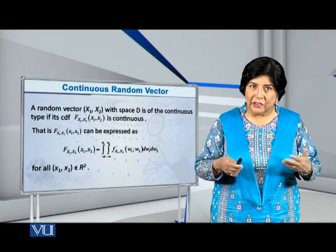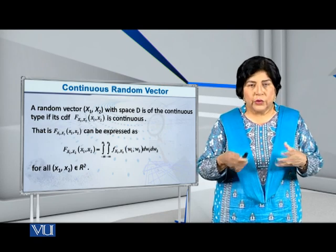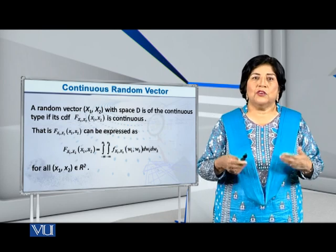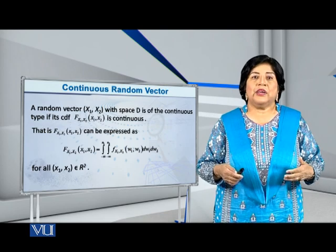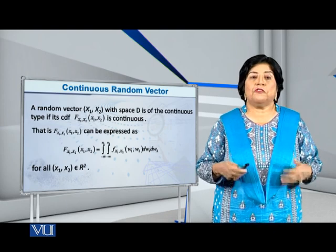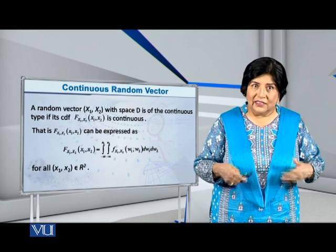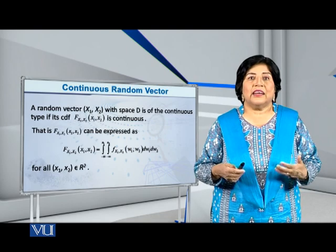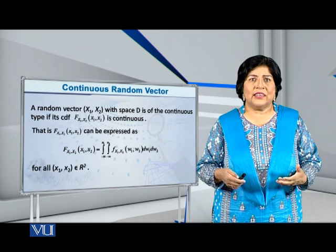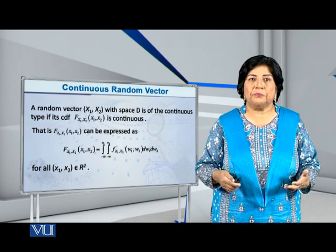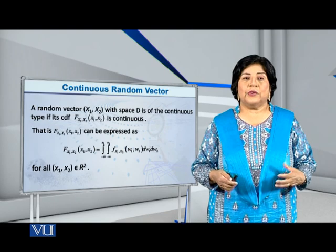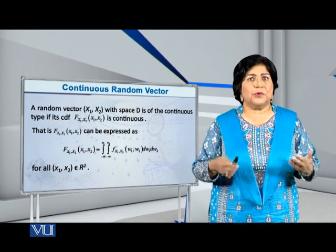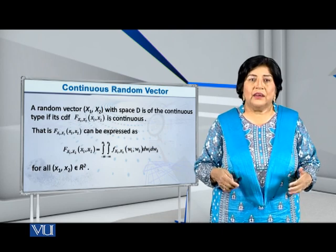If this cumulative distribution function is a continuous function, meaning that the variables are continuous variables, then we say that it is a random vector of a continuous type. Because continuity exists, F of the random variables x1, x2 at the point small x1, x2 will be given by the integral from minus infinity to x1 and then the second integral from minus infinity to x2 of small f of x1, x2 at the point w1, w2, dw1 dw2, for all ordered pairs small x1, small x2 belonging to the two-dimensional Euclidean space, denoted by capital R squared.